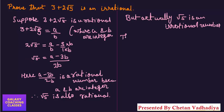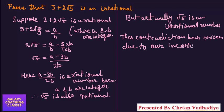So what happened, contradiction came. Why? Because RHS is rational, LHS is irrational. So this contradiction has arisen due to our incorrect assumption that 3 plus 2 root 5 is rational.